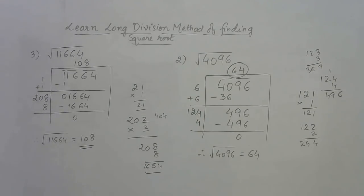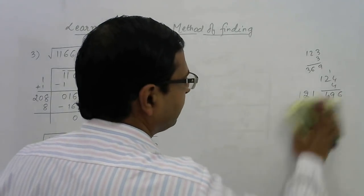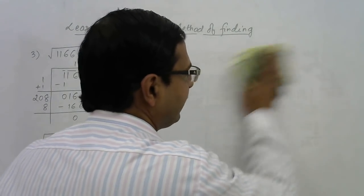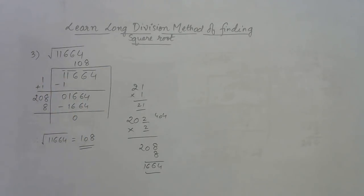Another important question for long division—let us have a practice question so we can understand this method in a better way. I will have another 5 digit number: 47089.